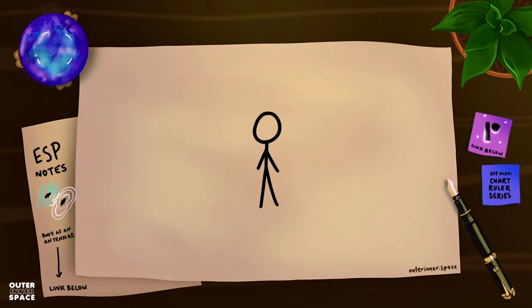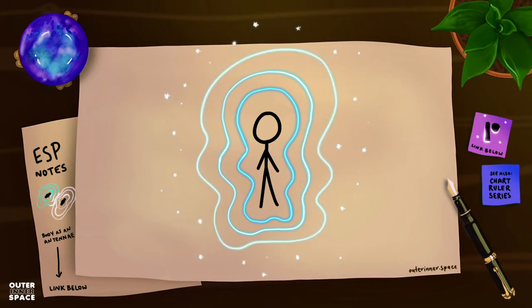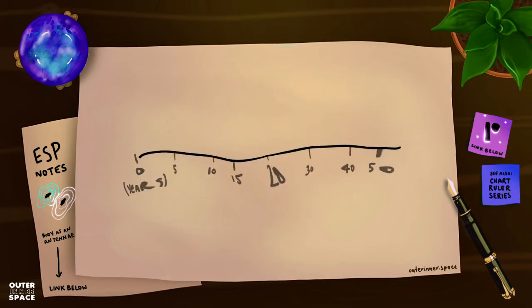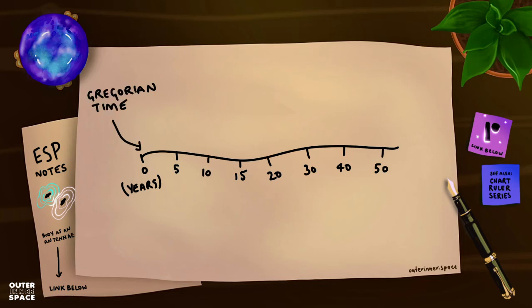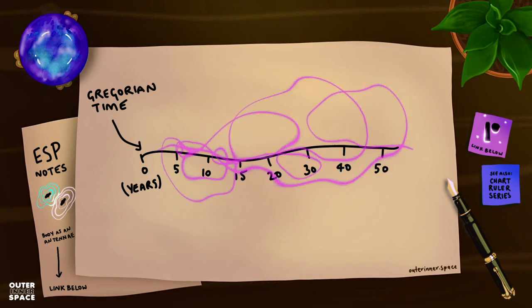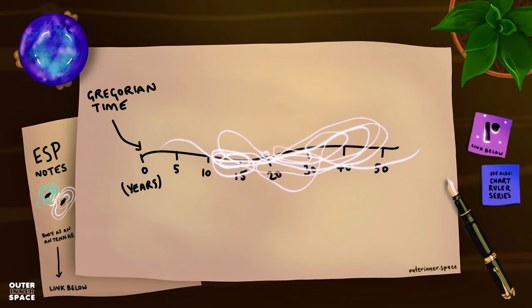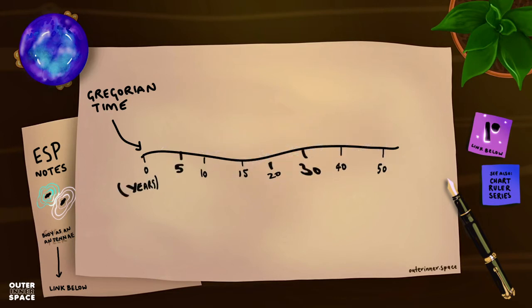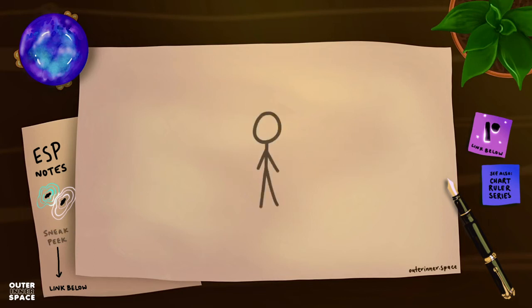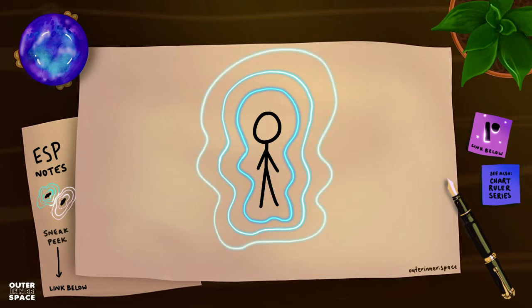With Capricorn energy there is this slow release with extrasensory perception. The cycles of time play a huge role in how these perceptions and abilities come into play. This is why there's that association with Capricorn energy and Saturn about the lessons that we face again and again in these loops.